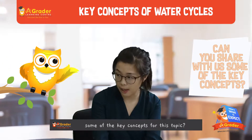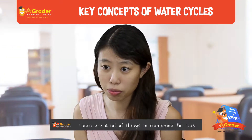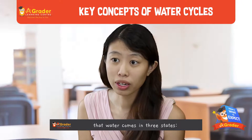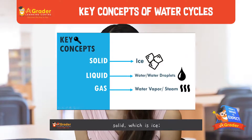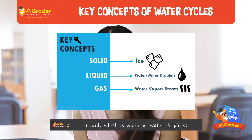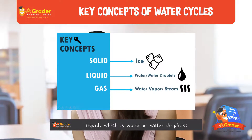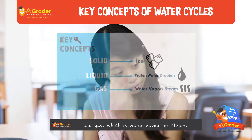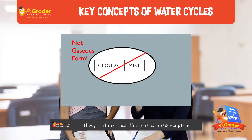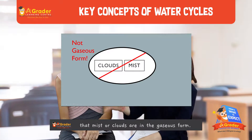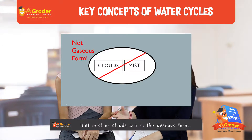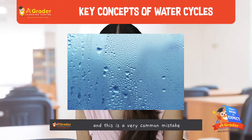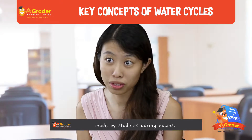So can you share with us some of the key concepts for this topic? There's a lot of things to remember because it's related to next month as well. They have to learn that water comes in three states: solid, which is ice; liquid state, which is water droplets; and gaseous state, which is water vapour or steam. There's a misconception that a lot of students think that mist or clouds is actually in the gaseous form — they are actually formed by water droplets.